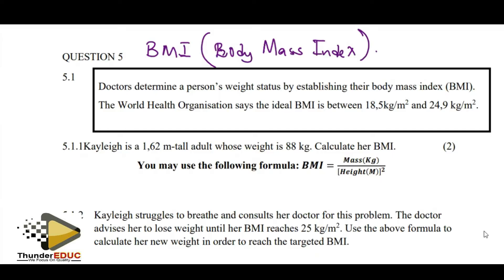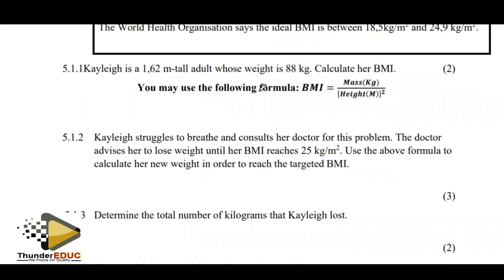Doctors determine a person's weight status by estimating or establishing their Body Mass Index, the BMI. The World Health Organization says that the BMI is between 18.5 kg/m² and 24.9 kg/m² as the standard. Person K is a 1.62-meter tall adult whose weight is 88 kg. Calculate the BMI. We say 88 divided by 1.62 squared.